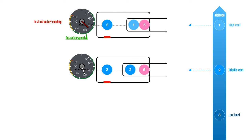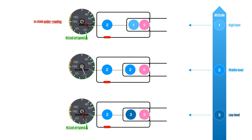What if the aircraft descends from the middle level to fly in the lower level where the static pressure is 3 units? Again, the static pressure in the case does not change because it's trapped inside by the blocked static vent. The dynamic pressure also does not change because the aircraft's actual airspeed is still 100 knots.